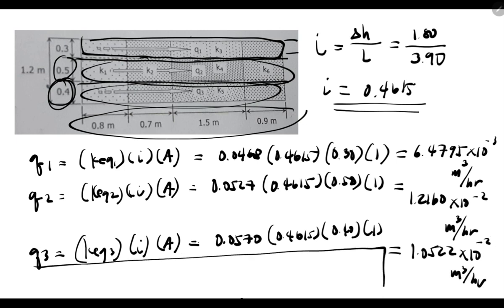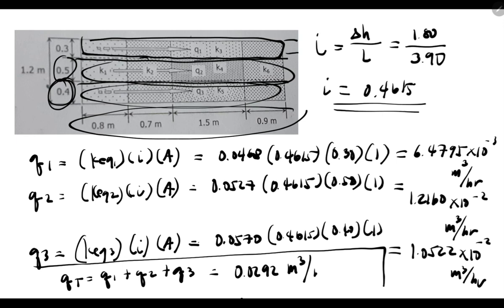Let's now combine all of them. Total flow = Q1 + Q2 + Q3 = 6.4795×10⁻³ + 1.2160×10⁻² + 1.0522×10⁻² = 0.0292 cubic meter per hour. That's our answer for total flow.